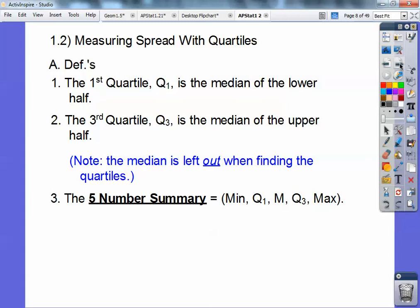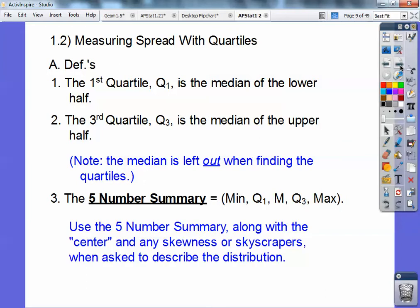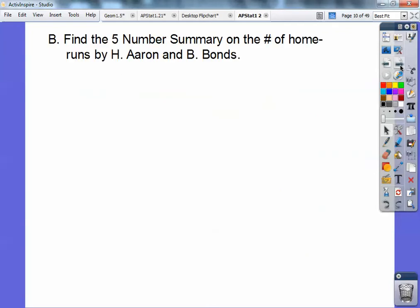The five-number summary system is the minimum, quartile one, the median, quartile three, and then the maximum. And you use the five-number summary system along with its center and any skewness when describing the distribution. So here's the example.